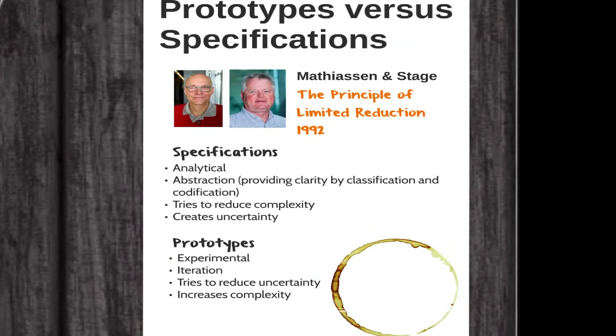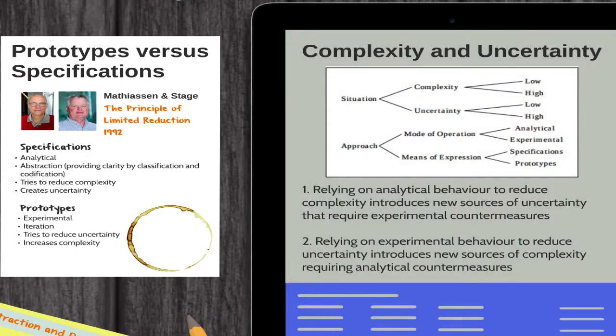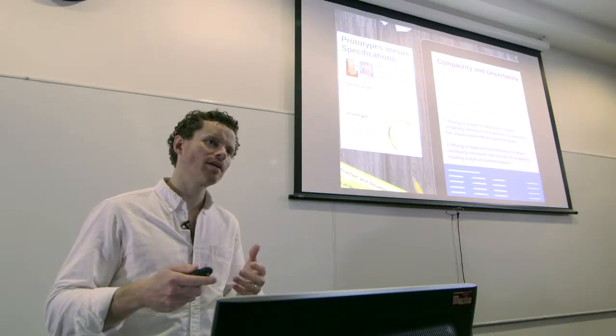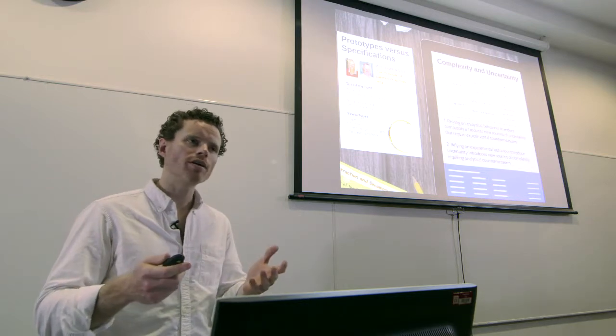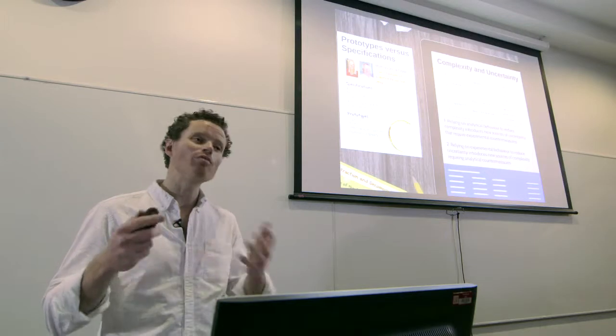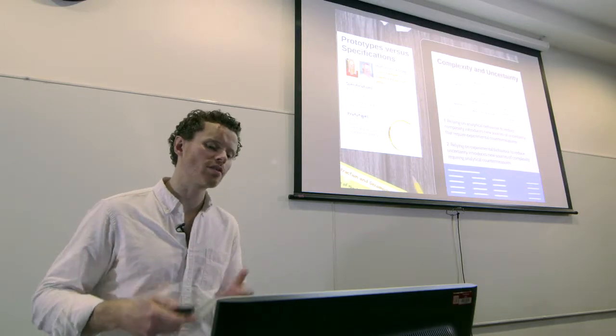Mathiassen and Stage in 1992 wrote an important paper called 'The Principle of Limited Reduction.' They said that whilst analytical behaviour is really important for reducing complexity — that is, understanding the problem — it's experimental behaviour, better known as prototyping, which can be used to reduce uncertainty, that is, understanding how people will actually use the software. But relying too heavily on one or the other won't work. Too much analytical written specifications leaves you with uncertainty; relying only on prototypes leaves you with a lot of complexity, because, for example, you might not know how to determine the figures being shown on the screen.